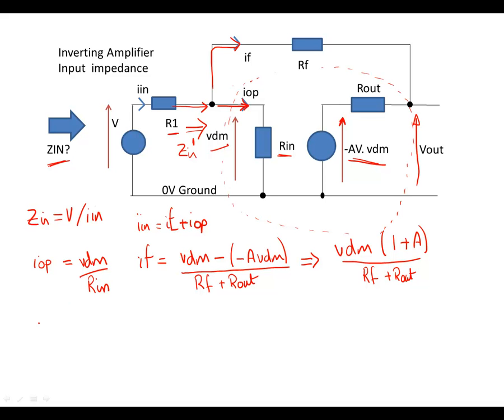If we put those two together and calculate Iin, my current flowing in is equal to the current in the op amp plus the feedback current, which is equal to the current in the op amp, Vdm over Rin, plus this new term, Vdm times 1 plus A open loop gain over RF plus Rout. So we've now calculated the total current flowing into our circuit.